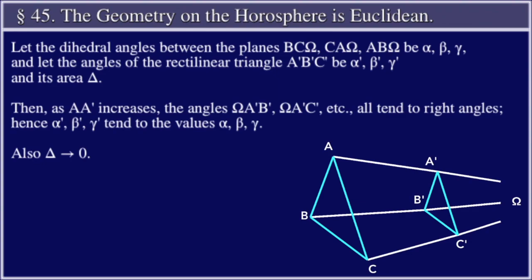Then as AA' increases, the angles ΩA'B', ΩA'C', etc., all tend to right angles. Hence α', β', γ' tend to the values α, β, and γ, and also Δ approaches zero.